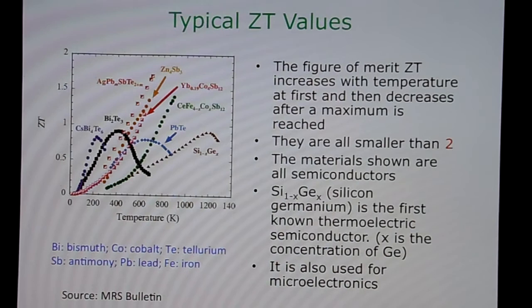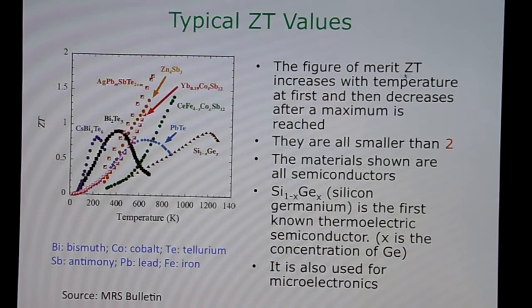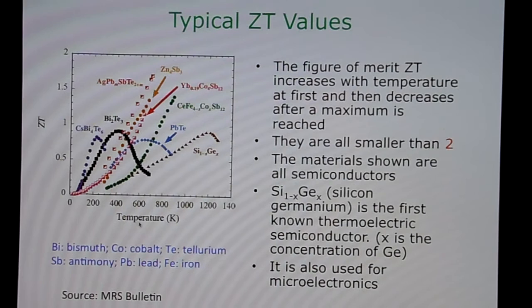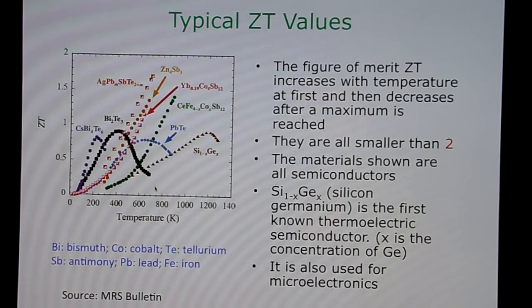Now let's look at some typical ZT values. On the left-hand side of this page we show the plot of the Figure of Merit ZT on the vertical axis as a function of the absolute temperature T. All temperatures are measured in Kelvin, starting from absolute zero and going up to 1,400 Kelvin.